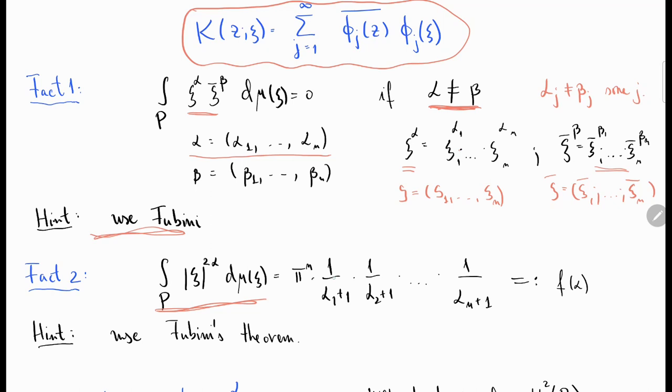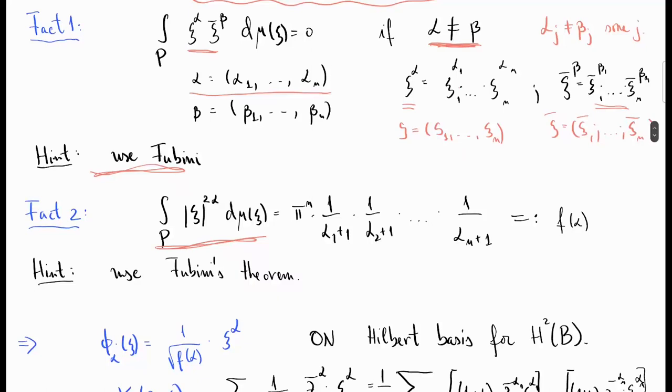Integrate component-wise using Fubini's theorem and you will see that this integral on the polydisc is nothing but pi to the n times 1 over alpha 1 plus 1 times 1 over alpha 2 plus 1 all the way to 1 over alpha n plus 1. In each component you can use polar coordinates. This tells you that this integral, which is the L2 length of xi to the alpha, is equal to this expression here. Let's call that conveniently F alpha, it only depends on alpha.